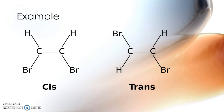What makes one the cis isomer and the other the trans isomer is the position of the hydrogen atoms. In the cis isomer on the left, both hydrogens are on the same side of the double bond. In the trans isomer on the right, one hydrogen is up and the other is down. This difference, though small visually, results in different melting points, boiling points, solubilities, and reaction products.